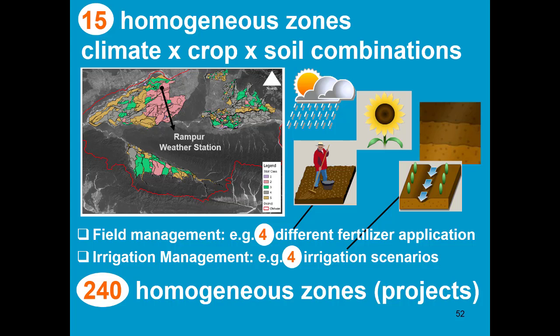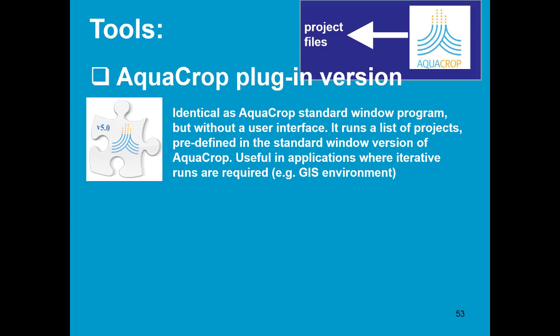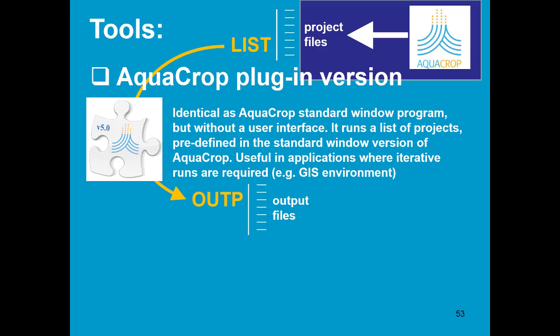In AquaCrop, we save the description of each homogeneous zone in a project. Each project is then run for 30 successive years. FAO has developed a plugin version for AquaCrop. It is identical to the standard Windows program, but there is no user interface. With the standard AquaCrop software, we make projects, put those projects in the list of the plugin version, and then the plugin version is run and the output is stored in output files.